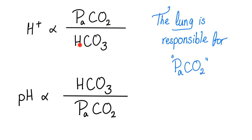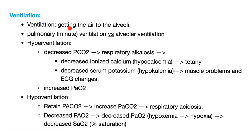Hydrogen ion concentration is proportional to PaCO2 over HCO3 — or expressed as pH: HCO3 over PaCO2. The lung is responsible for PaCO2; the kidney is responsible for HCO3. Ventilation is getting air into the alveoli. Pulmonary (minute) ventilation is different from alveolar ventilation — alveolar ventilation equals total ventilation minus the dead space. Hyperventilation leads to washing out of CO2 and respiratory alkalosis. If PCO2 in the alveolus is decreasing, alveolar O2 (big A) is increasing — they are always opposite.